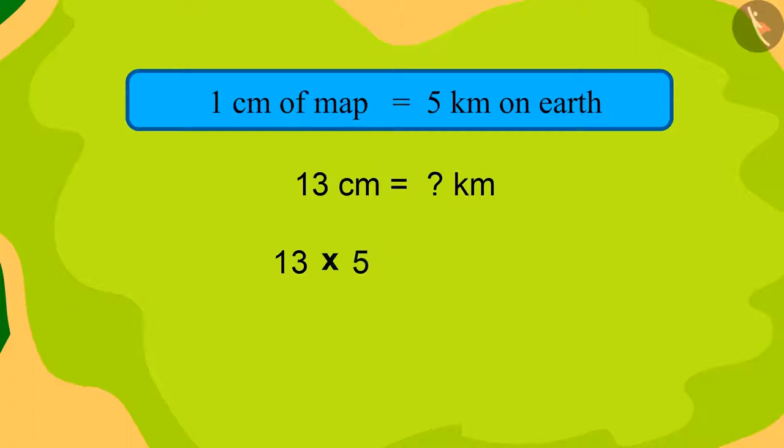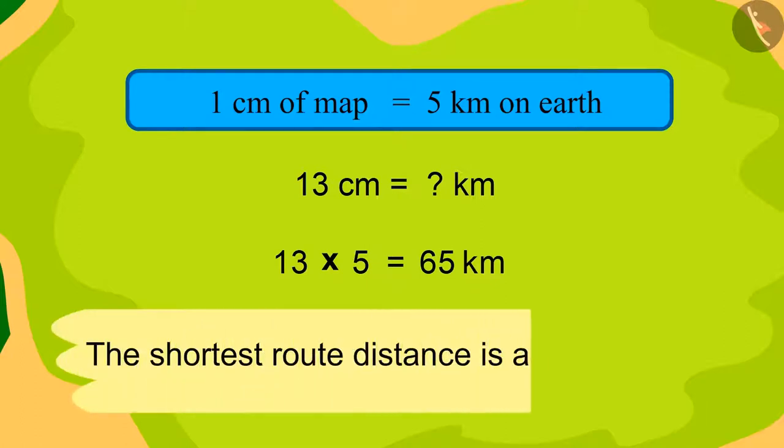13 times 5, that is 65 kilometers. The length of the shortest route actually is 65 kilometers.